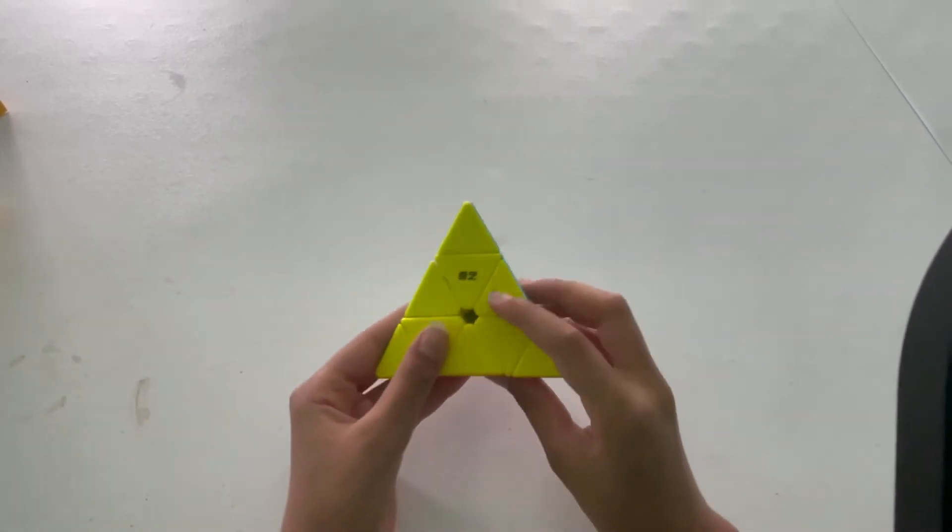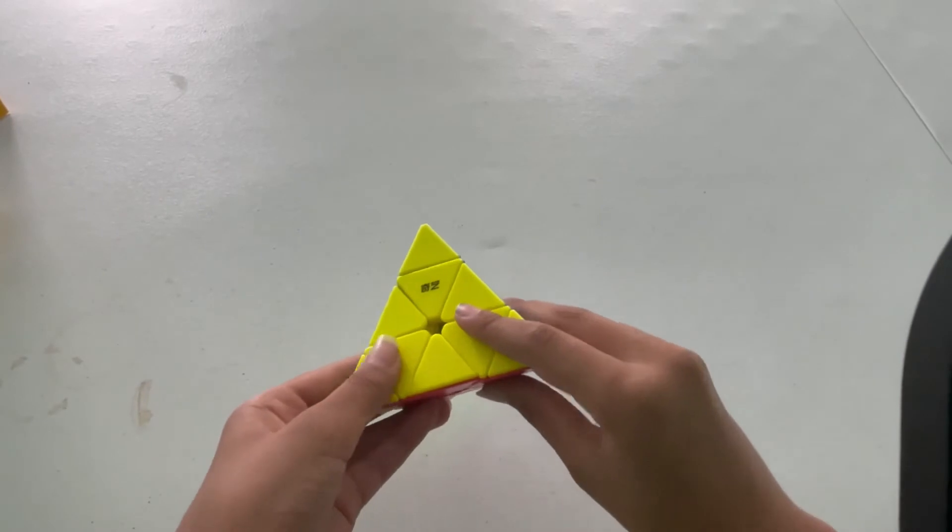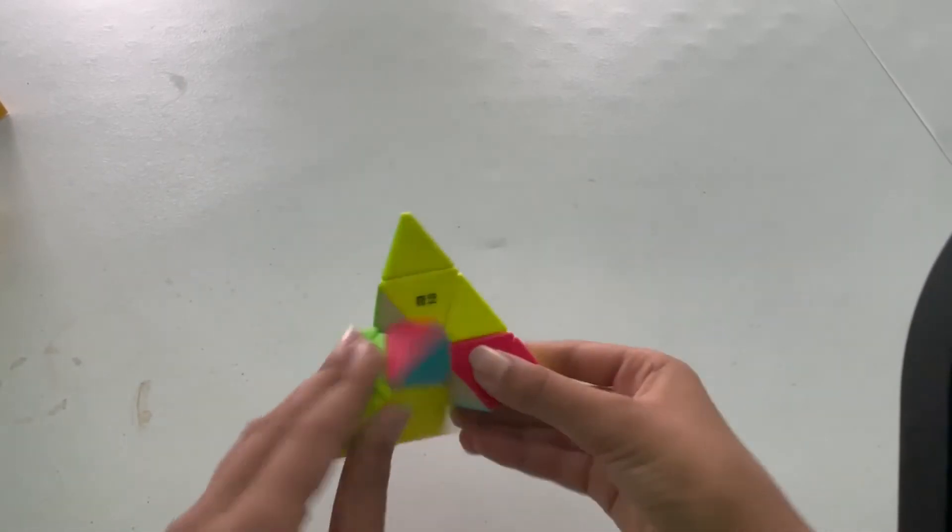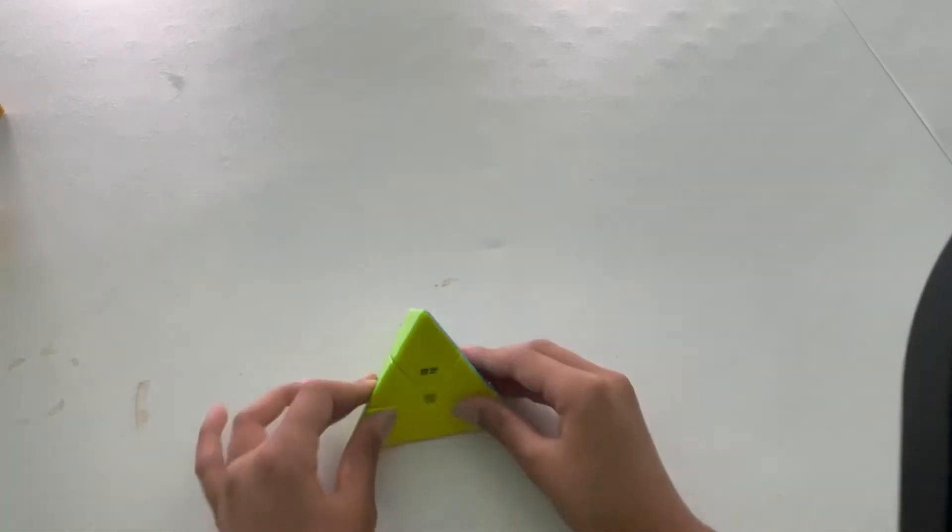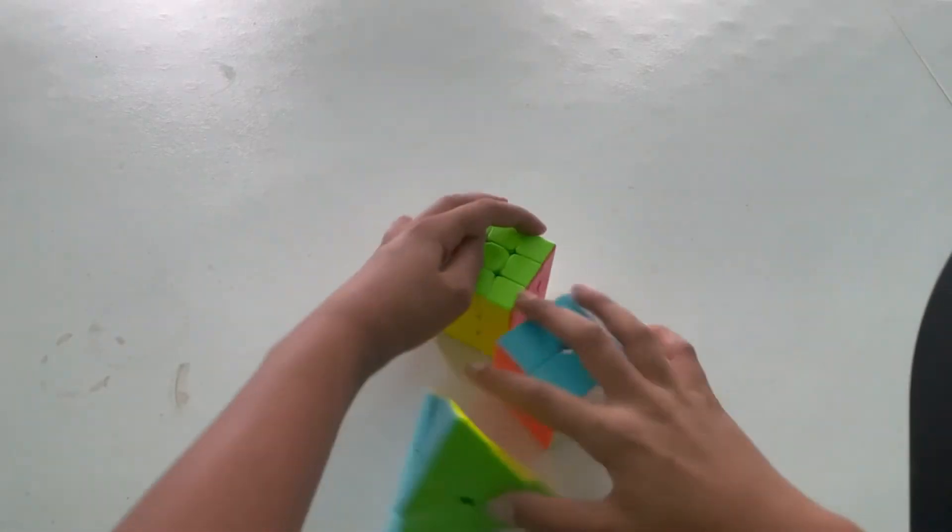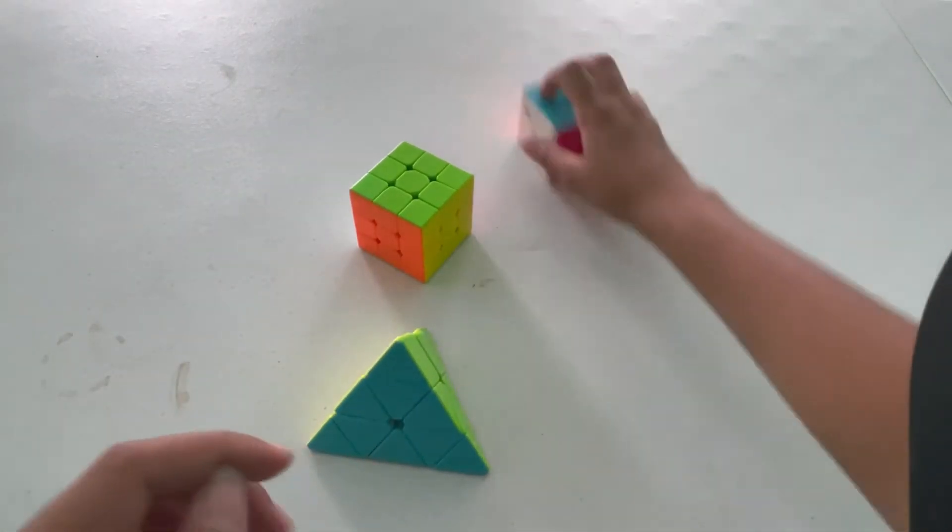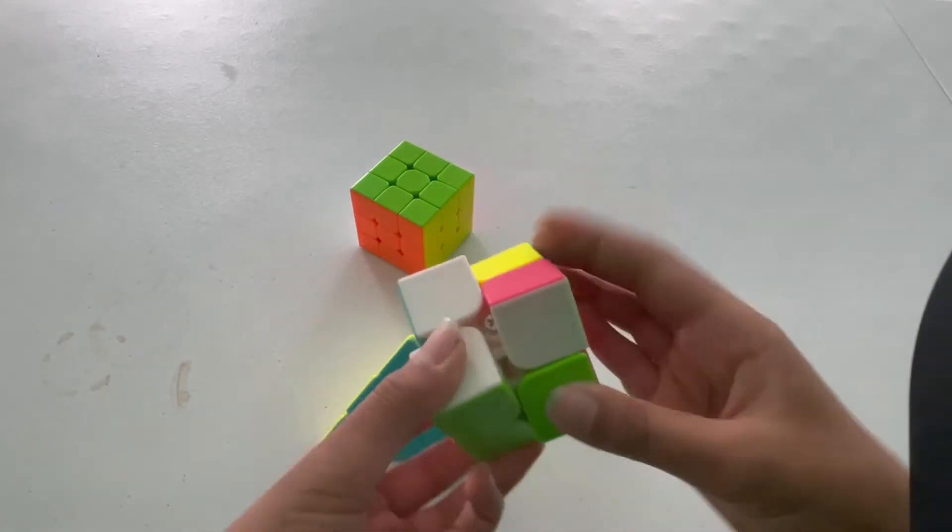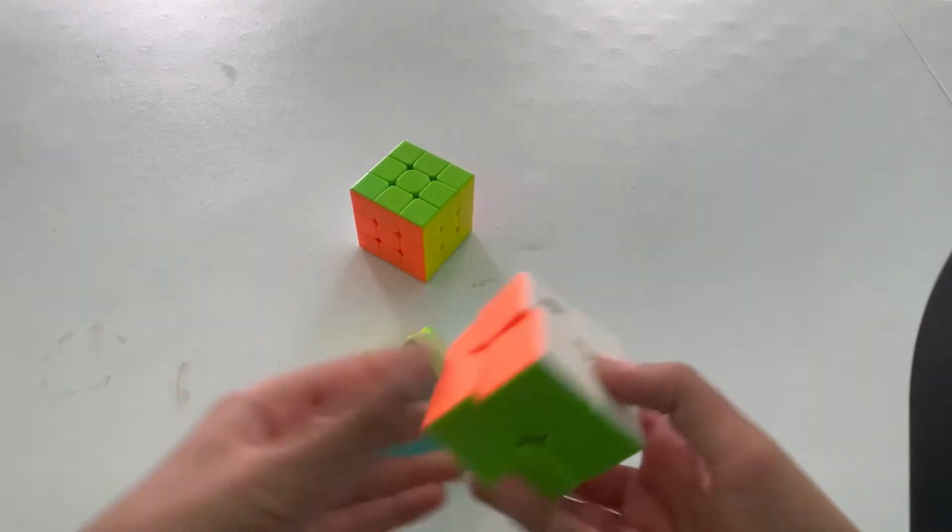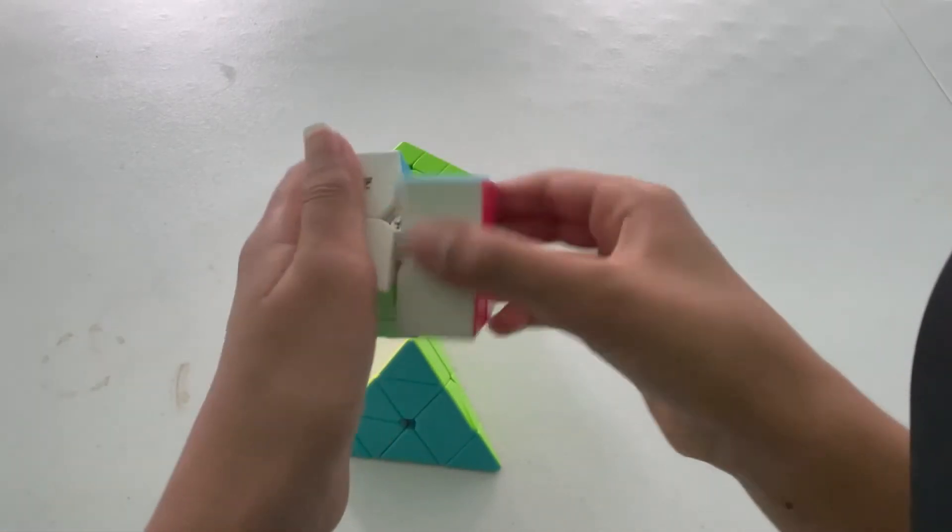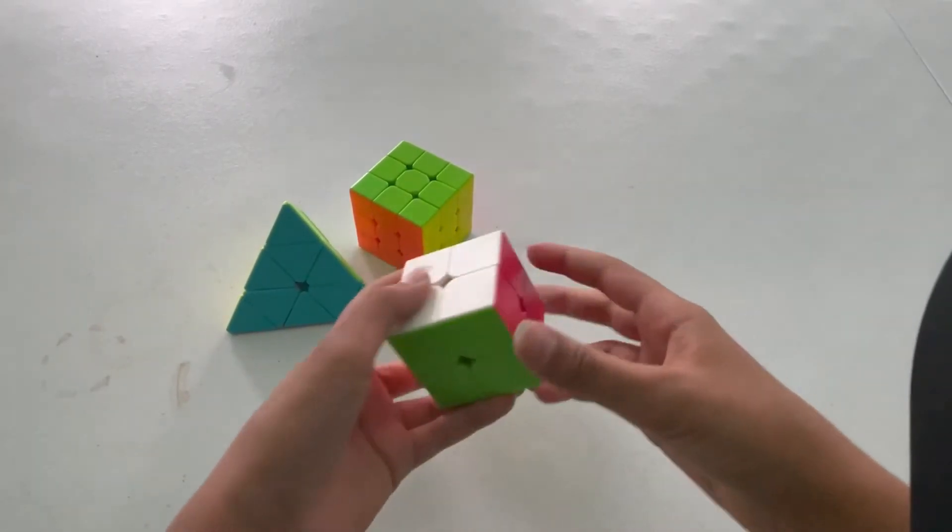But the only thing I did memorize was the four step stuff. Nice. So, this is the two by two. It's pretty smooth. I mean, like, looks pretty sturdy. Doesn't really pop.